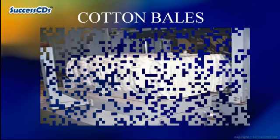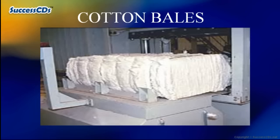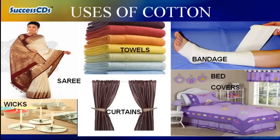The ginned cotton is then pressed into bales, which are then transported to the factories where the fiber is first spun into yarn and then woven to make cotton fabric. The finished fabric is then used to make sarees, towels, bandages, wicks, curtains, bed covers and many more.